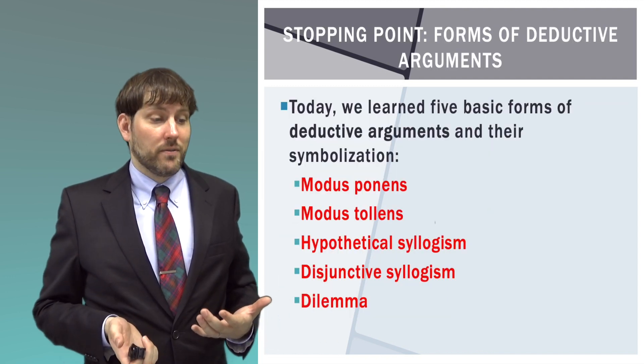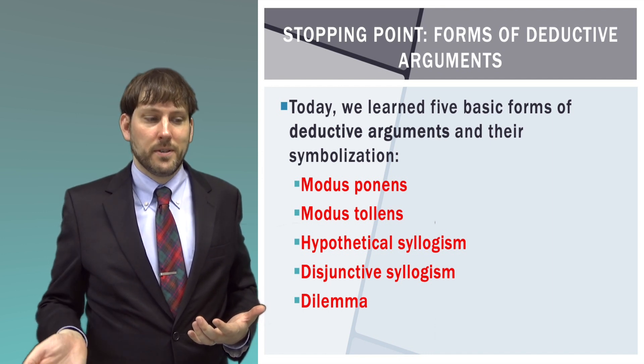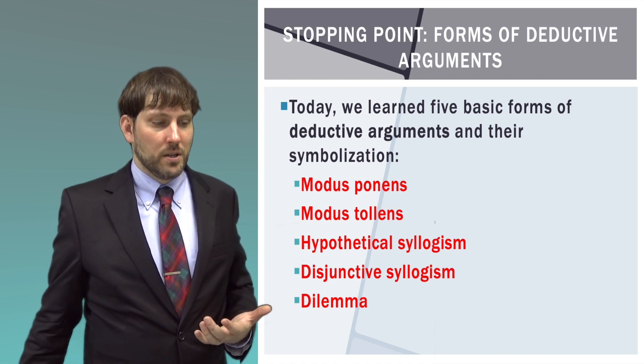Today we learned the five basic forms of deductive arguments and their symbolization: modus ponens, modus tollens, hypothetical syllogism, disjunctive syllogism, and dilemmas. This week we learned the basic concept of validity, three laws of logic, and five basic argument forms. Next week we will look at validity in more detail and learn how to check if something is valid and how to correctly understand the operators we are using. Please ask me questions in class if you are having trouble. The key to passing this class is understanding the material. Thank you for your time and attention.